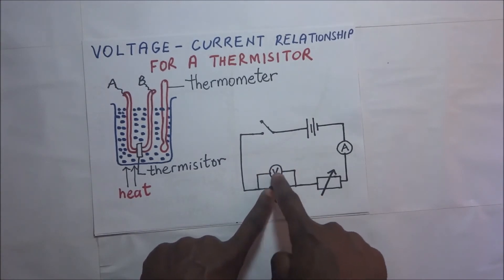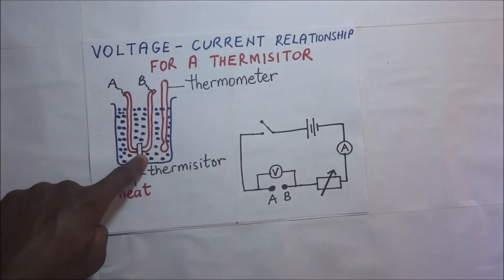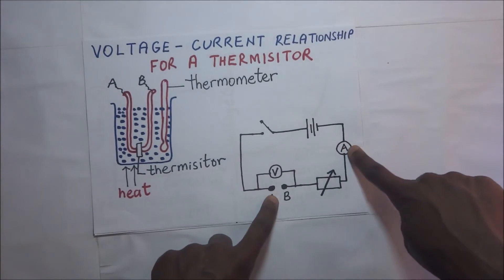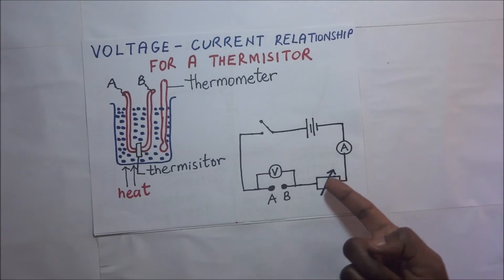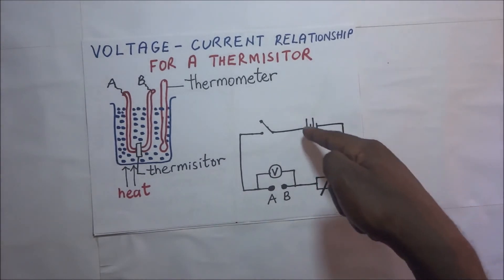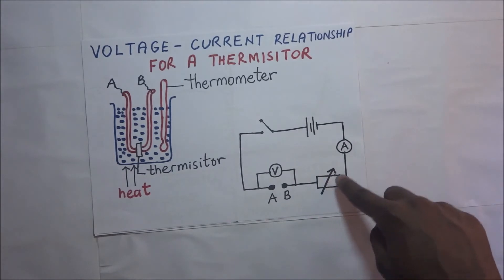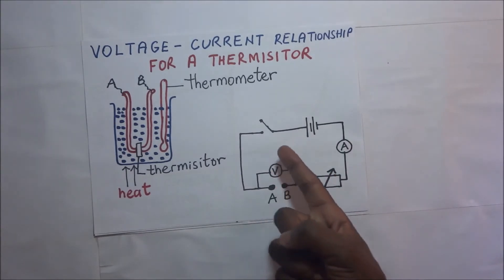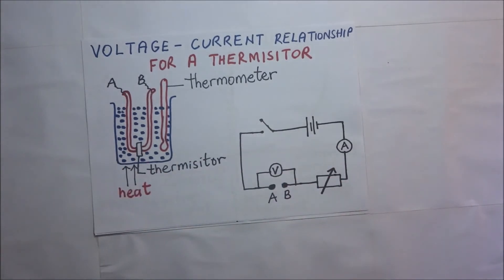This voltmeter is what is going to give us the potential difference across the ends of the thermistor. We are having an ammeter in our circuit and this ammeter is responsible for giving us the amount of current that is flowing through the circuit. We have a rheostat also, which we are going to be using to regulate the amount of current flowing. After setting up our experiment like that, the first thing we are going to do is to close the switch.